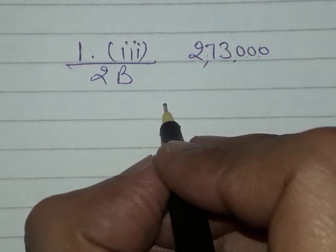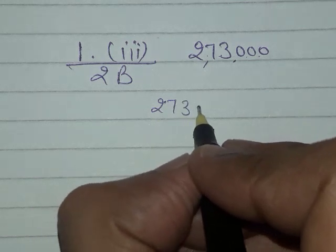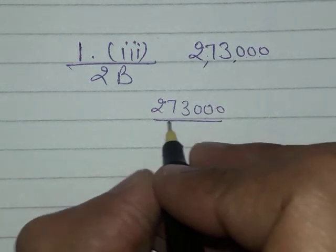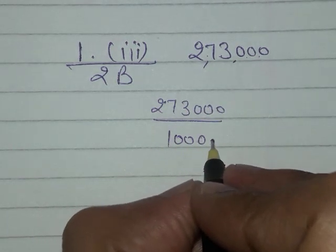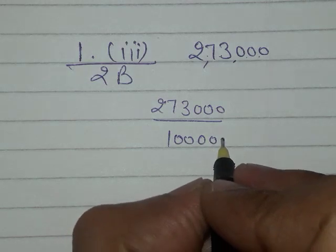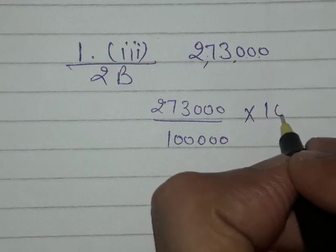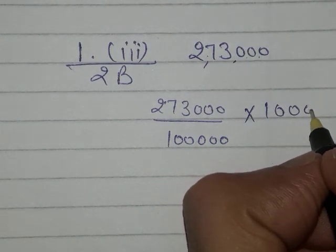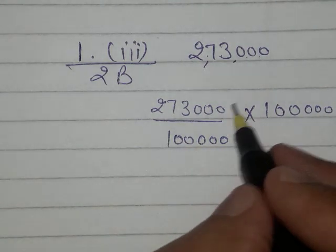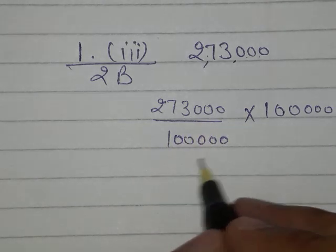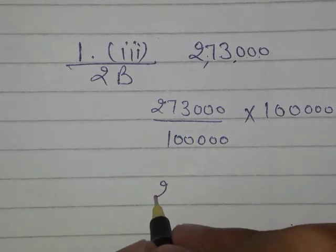To shift the point five digits left, you have to divide the given number by one lakh. And if you have divided the given number by one lakh, then you have to multiply the given number by one lakh. If you divide 273,000 by one lakh, it will become 2.73.